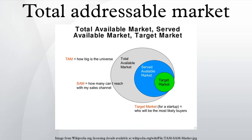Total addressable market, also called total available market, is a term that is typically used to reference the revenue opportunity available for a product or service. TAM helps to prioritize business opportunities by serving as a quick metric of the underlying potential of a given opportunity. One approach is to estimate how much of the market any company can gain if there were no competitors. A more encompassing variation is to estimate the market size that could theoretically be served with a specific product or service.